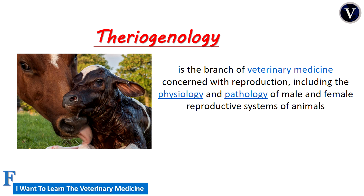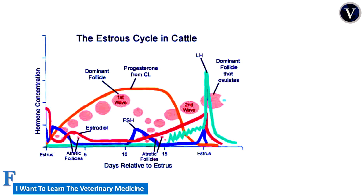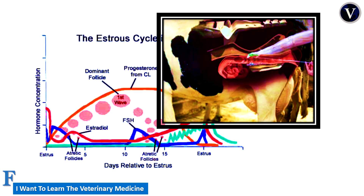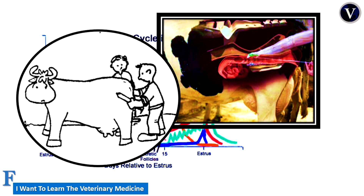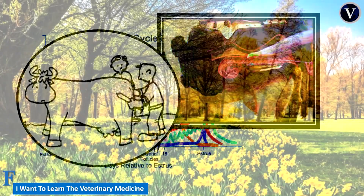It can help us understand the estrous cycle and help us to make a good artificial insemination. By talking about artificial insemination, you can see on farms they are having vets that are doing artificial insemination.